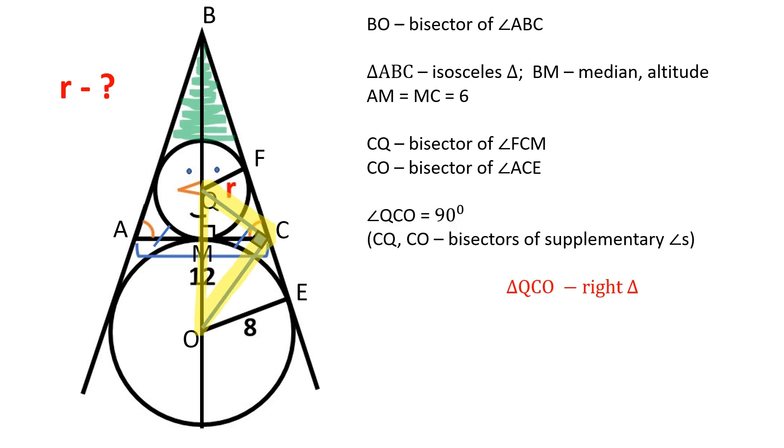Triangle QCO is a right triangle. MC is the altitude drawn from the right angle to the hypotenuse which divides the hypotenuse into two segments. The length of the altitude is the geometric mean of the two hypotenuse segments.